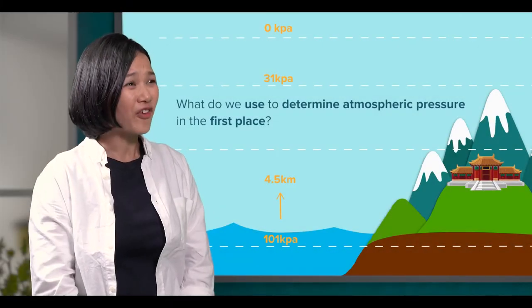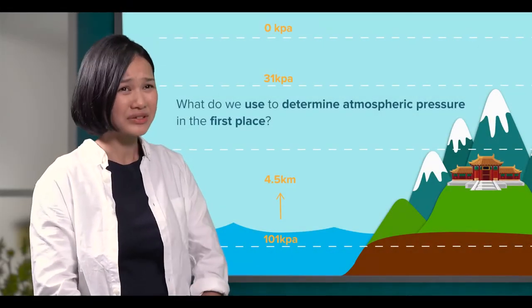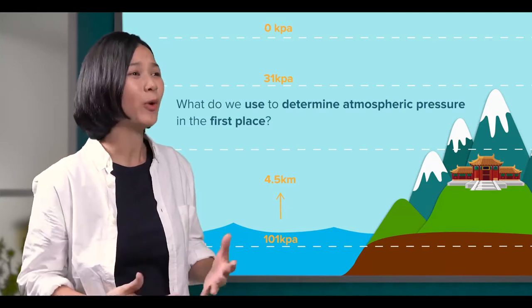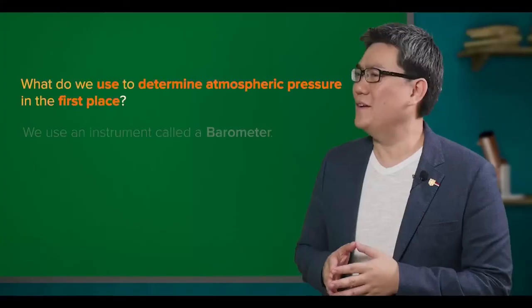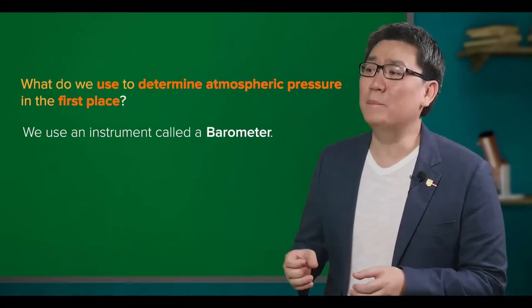A 35% difference sounds a lot! But what do we use to determine atmospheric pressure in the first place? We use an instrument called a barometer.